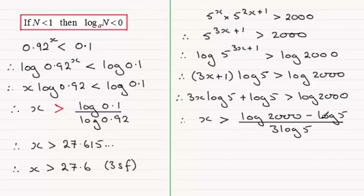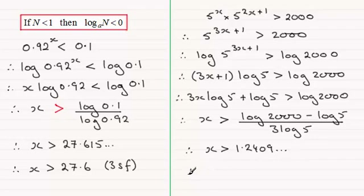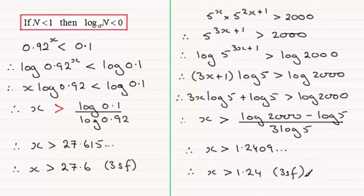I'll leave you to work that out on your calculator. If you do, you should find you get 1.2409. And if we round this one to three significant figures, then x is greater than 1.24 to 3SF.